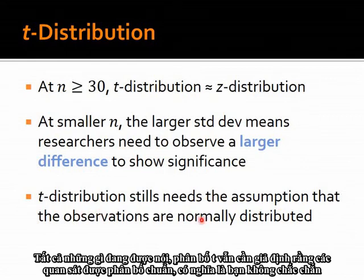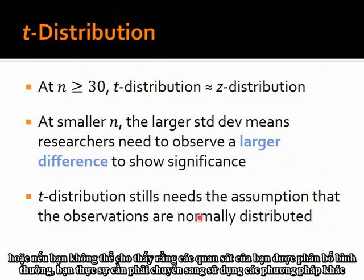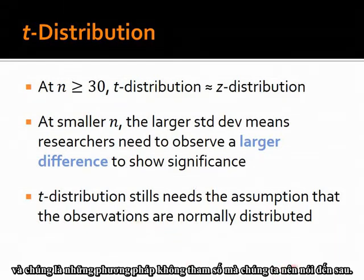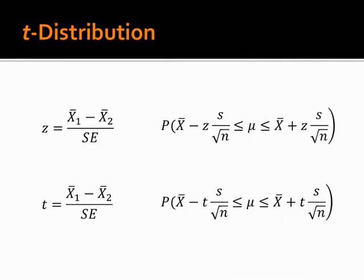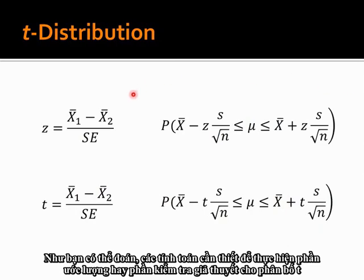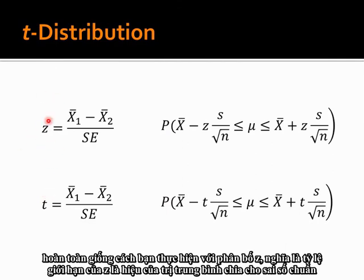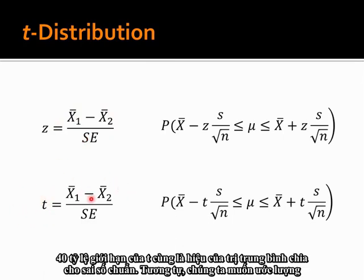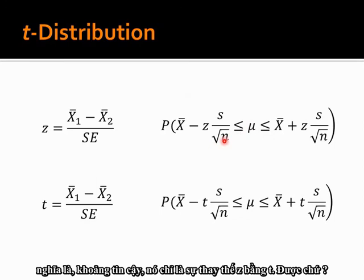The T-distribution still needs the assumption that observations are normally distributed. If you cannot show that your observations are normally distributed, you actually need to use different methods — the non-parametric methods, which we talk about later. The calculations required for estimation or hypothesis testing with the T-distribution are exactly the same as for the Z-distribution: the critical ratio for T is the difference in means divided by the standard error, and for confidence intervals it's just a replacement of Z with T.